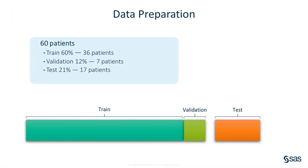Next, I'll split the images up into training, validation, and test images. Training images will be used to train the network, and validation images will be used to validate the network and make sure the model isn't overfitting the training data. Test images will be used to do a final evaluation of how the model performs.